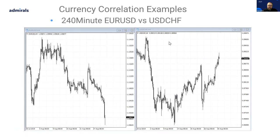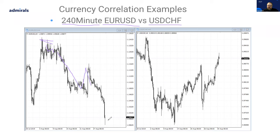Here's a four-hour chart — 240-minute euro/US dollar versus dollar/Swiss franc. There's a strong negative correlation between euro/dollar and dollar/Swiss franc. The euro/dollar made its highs, went into a period of consolidation before it fell, pulled back, and fell again. On the other side, the US dollar against Swiss franc made its lows, rose before it pulled back, and then rose again. So you can see the negative correlation, which is due to what's going on with the US dollar and also the relationship between the euro and the Swiss franc.